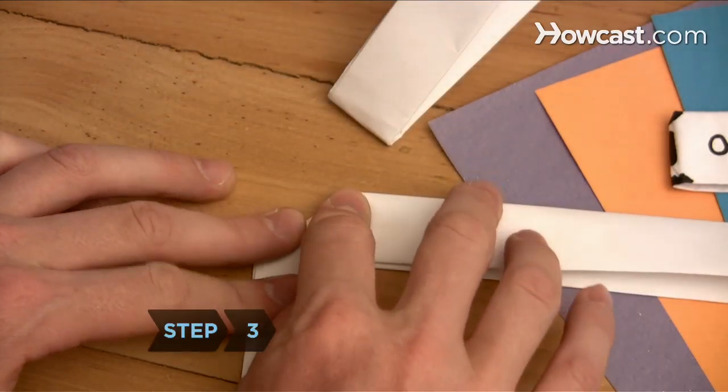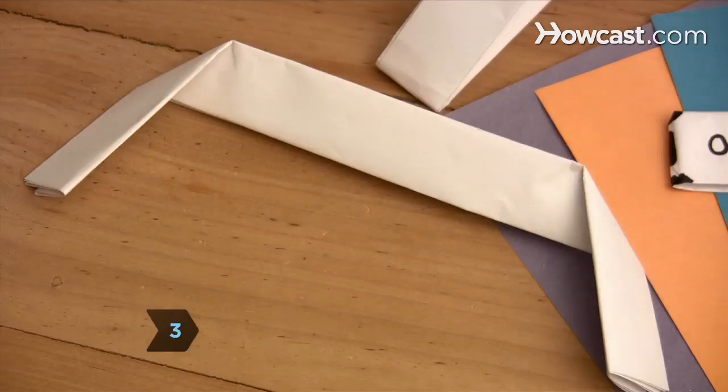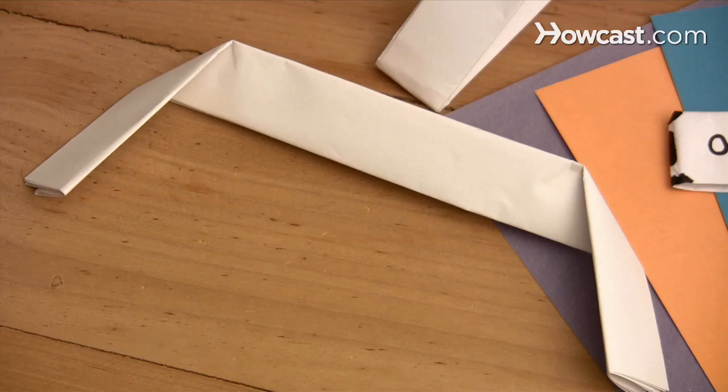Step 3. Fold both ends of the other sheet downward at a 90-degree angle, leaving a 4-inch section in the middle.